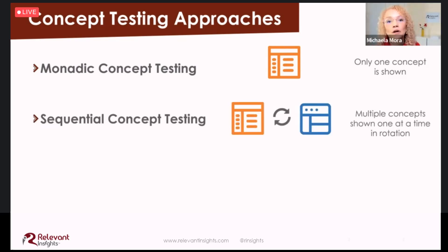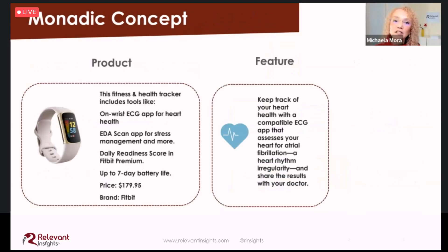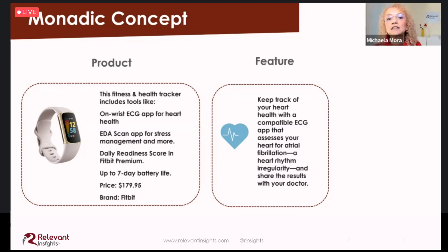Second, we have sequential concept testing, where we test several concepts with the same sample of people, but show concepts one at a time, rotating the order across respondents. A simple monadic concept test focused on a product or feature may include standard metrics such as appeal, perceptions of uniqueness, usefulness, likelihood to use and to purchase, and probing questions about why. This can apply to services too — it doesn't have to be physical products. This is easy to implement in an online survey tool and produces familiar metrics for stakeholders.